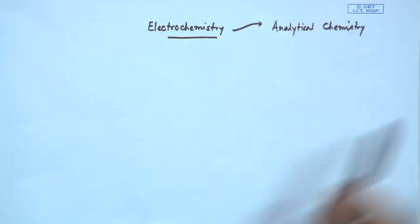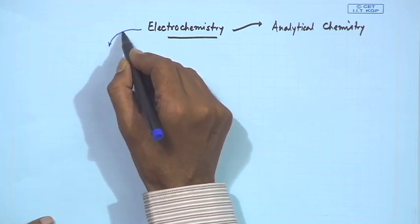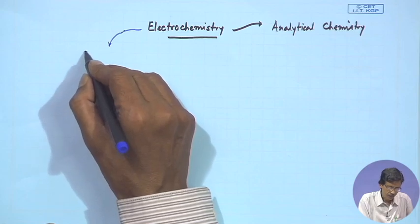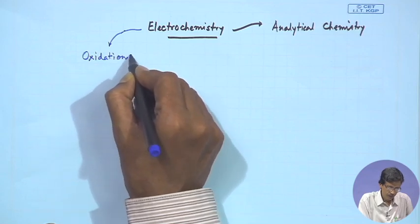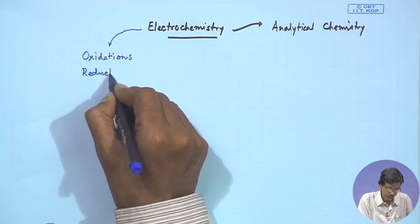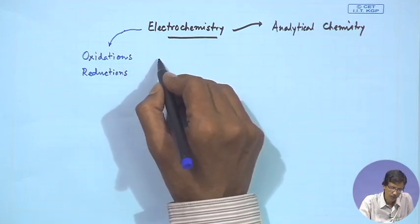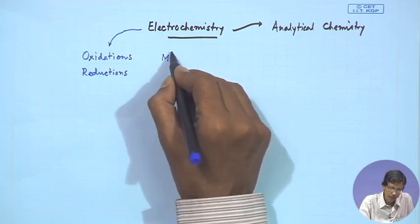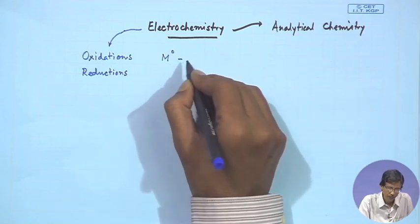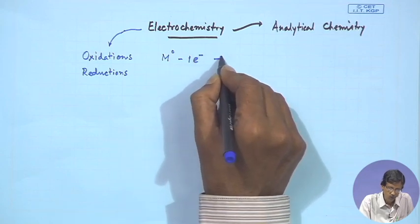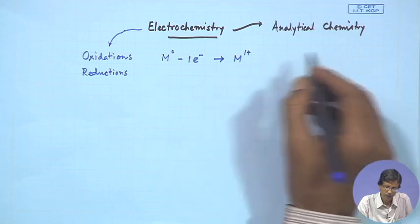We can analyze something in terms of the electrochemical behavior of a particular species. From our background, we know that for electron transfer reactions, we can have oxidations as well as reductions. We can follow these two things — and for a metallic species in zero oxidation state, that means the atom of that particular metal, if it loses one electron, it will go to M1+, a unipositive metal ion.